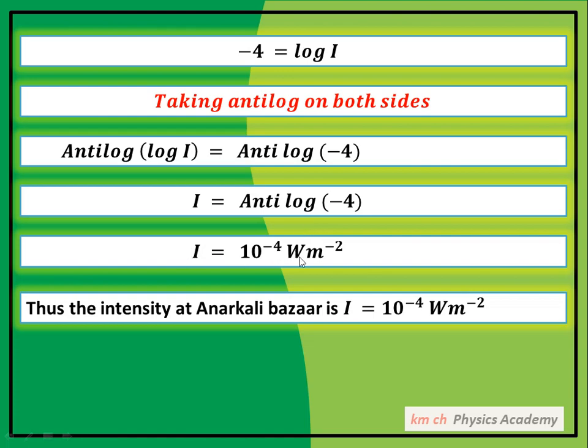اور unit کیا آئے گا I کے ساتھ؟ وارٹ پر میٹر سکوائر۔ تو اس طرح سے Anarkali Bazaar میں جو 80 dB کا intensity level تھا، اس کی intensity 10⁻⁴ W/m² بنتی ہے۔